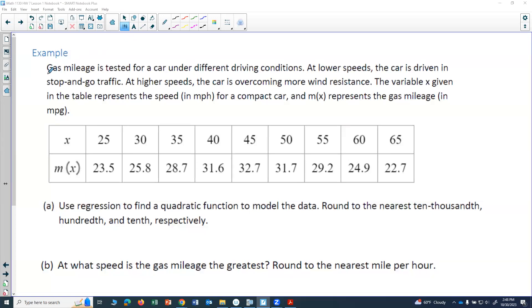In this example, we are told that gas mileage is tested for a car under different driving conditions. At lower speeds, the car is driven in stop-and-go traffic. At higher speeds, the car is overcoming more wind resistance. The variable x given in the table represents the speed in miles per hour, and m(x) represents the gas mileage in miles per gallon.